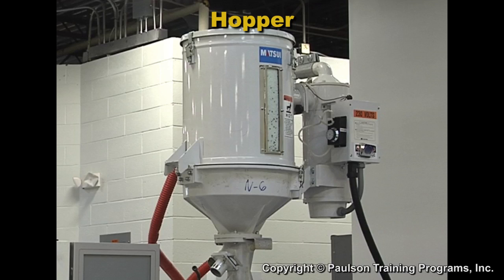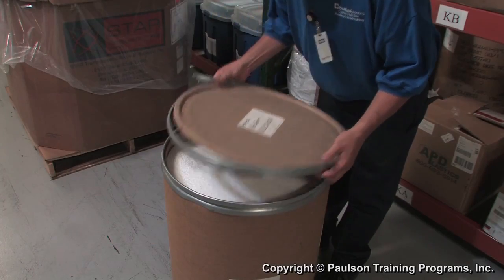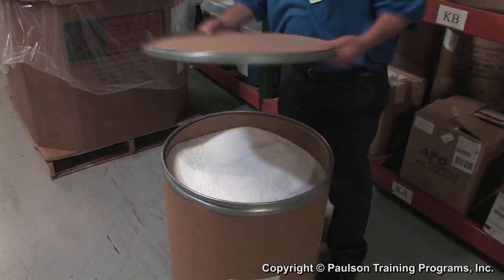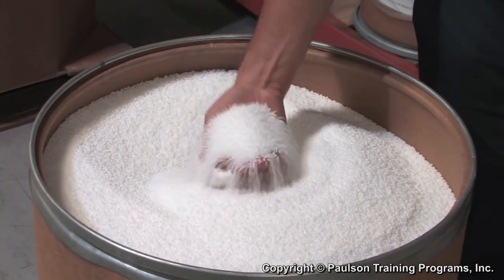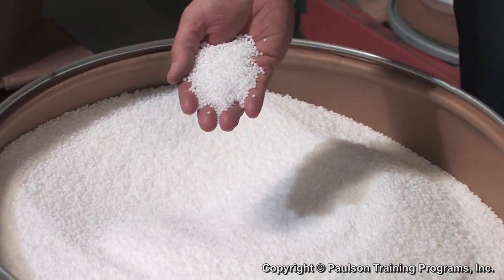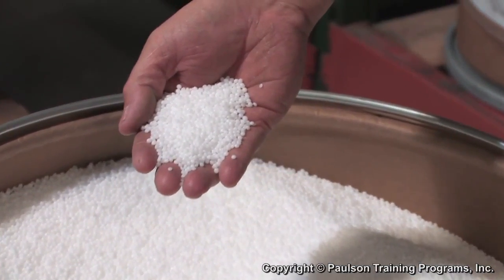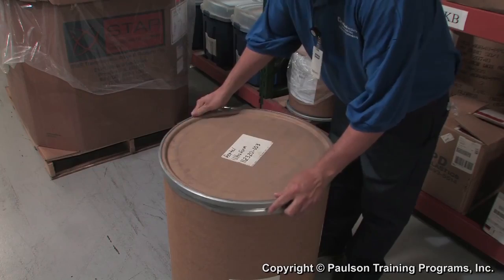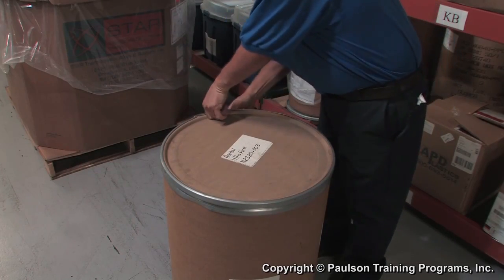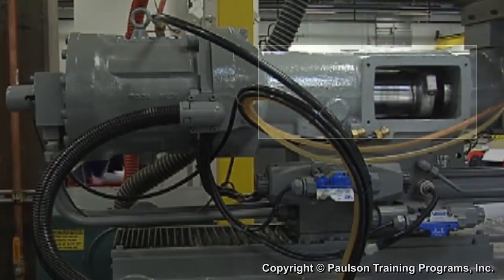Here is the hopper that holds the raw material. The plastic raw material is usually small round beads or cylindrical pellets. We'll use the terms pellets and granules to refer to all forms of plastic raw material. This is the injection cylinder.